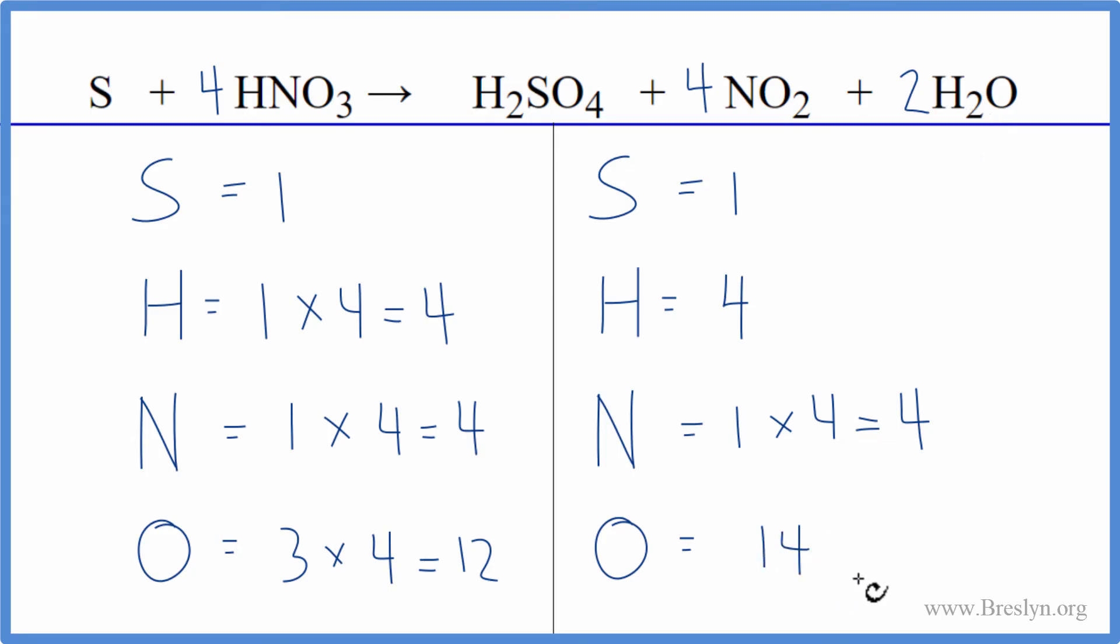Okay, well, we're getting closer, but that also changed our hydrogens. So we need to update the hydrogens. So now we have two, and then two times two is four, so two plus four, we have six hydrogen atoms.